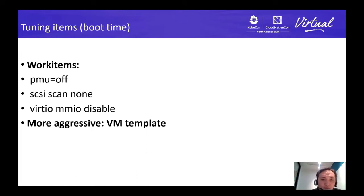These are the tuning items. For example, we disabled PMU initialization if the user doesn't want to use it. By default, the SCSI scan mode is synchronous; we can set it to 'none'. By default, ARM64 will create about 32 virtual MMIO devices even if the user doesn't use them — we can disable this in the kernel configuration.